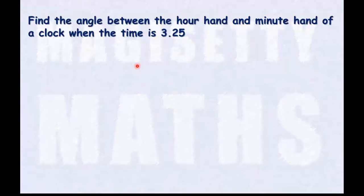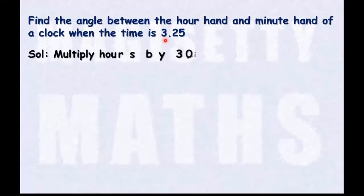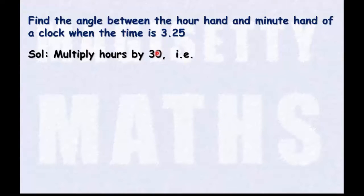For this, just multiply the hours by 30. Here we have given 3 hours. Multiplying 3 hours by 30, we get 90.